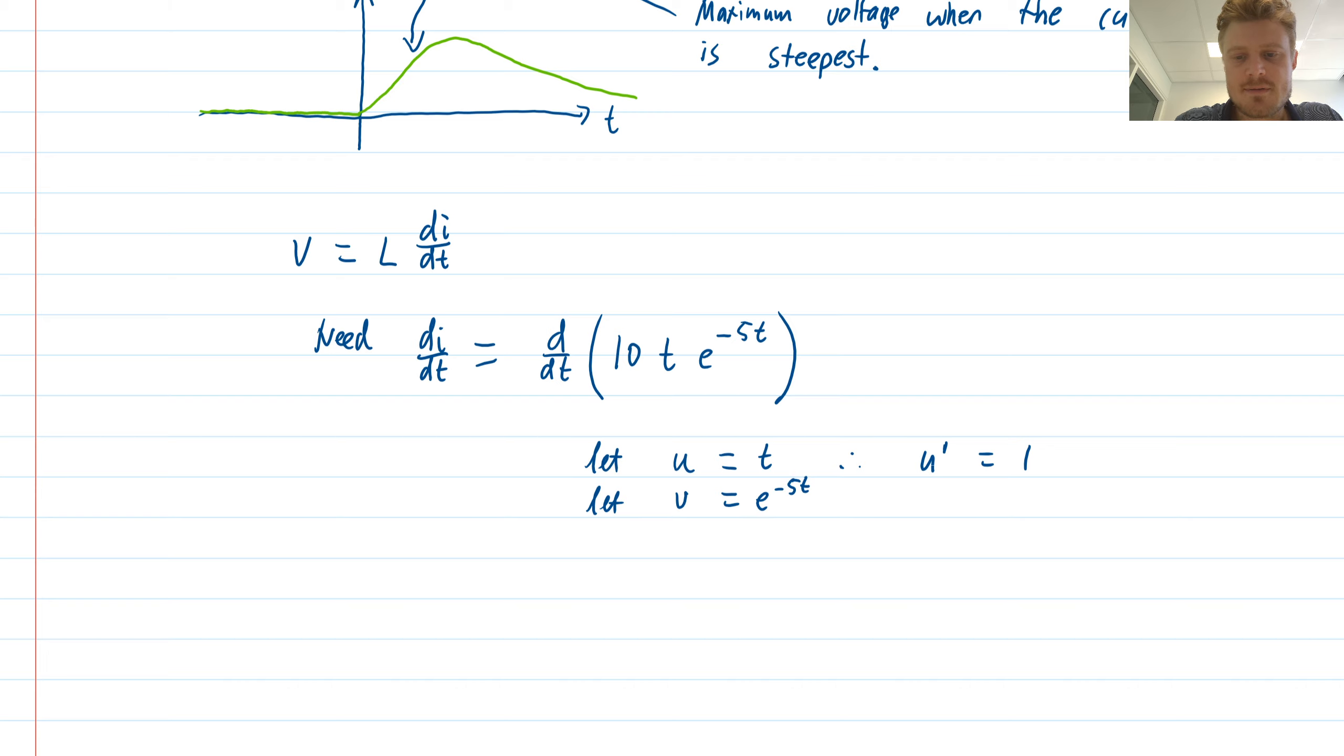I will let the product rule term v be e to the minus 5t, which gives me that v dash is going to be minus 5 e to the minus 5t. That's the derivative of this exponential.